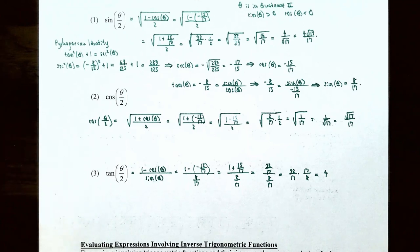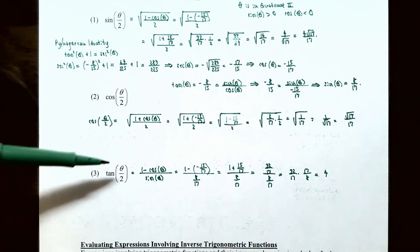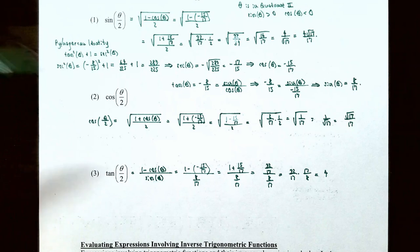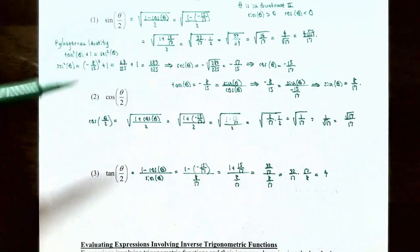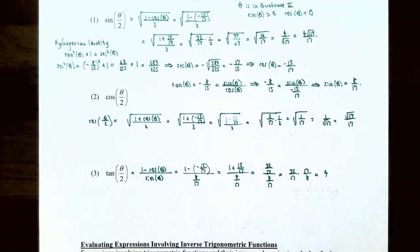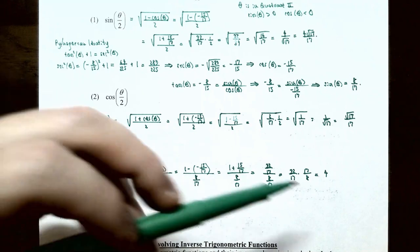Number 3: find tan(θ/2) using tan(θ/2) = (1 − cos θ) / sin θ. We have cos θ = −15/17 and sin θ = 8/17. So the numerator is 1 − (−15/17) = 1 + 15/17 = 32/17, and the denominator is 8/17. Dividing: (32/17) / (8/17) = (32/17) × (17/8) = 4. So tan(θ/2) = 4. This concludes the video on half angle formulas; next we'll talk about solving basic trigonometric equations.